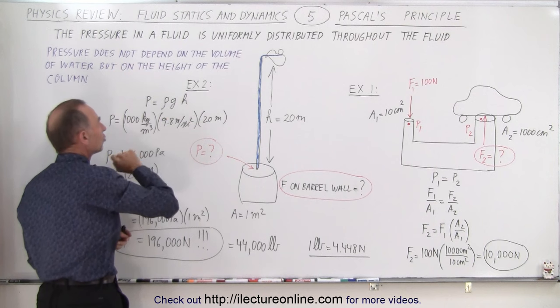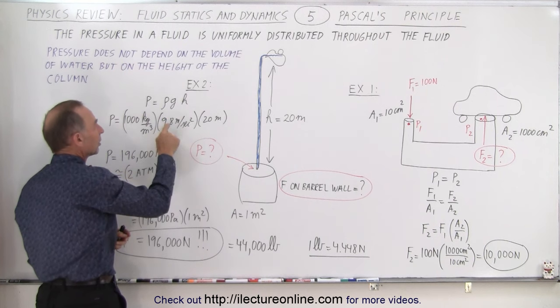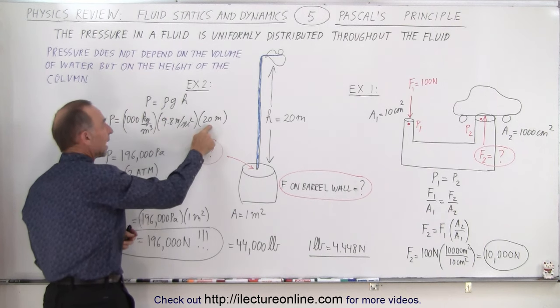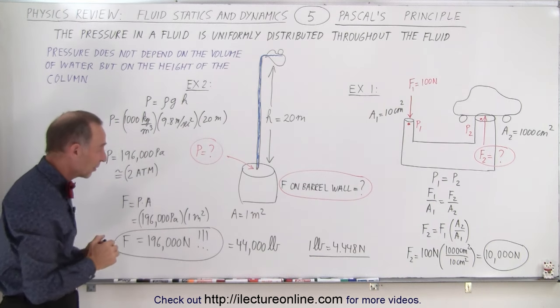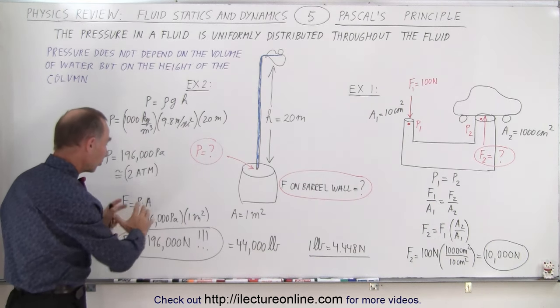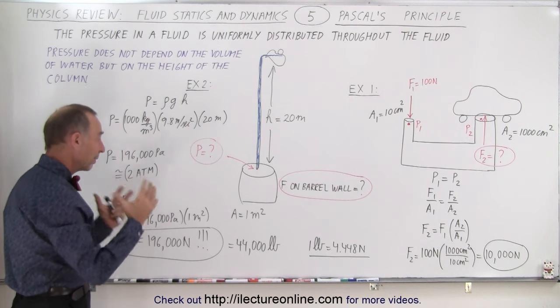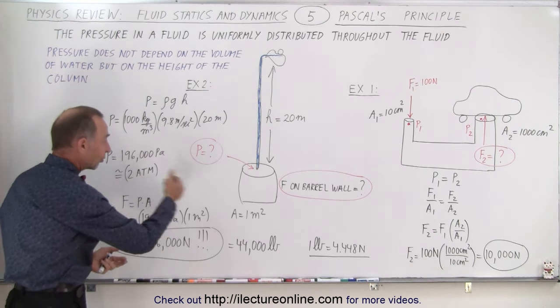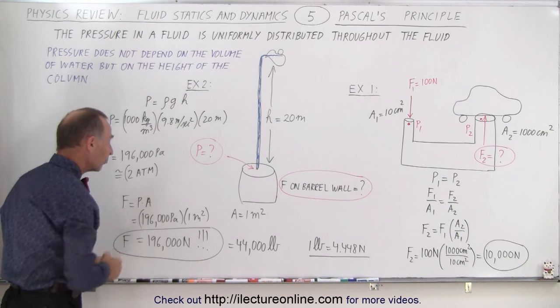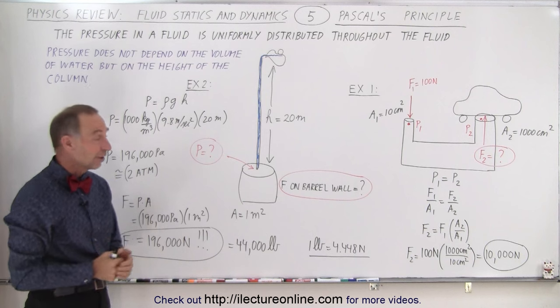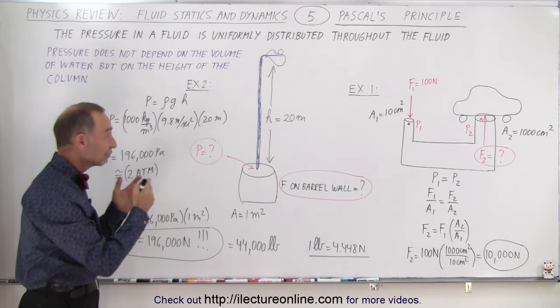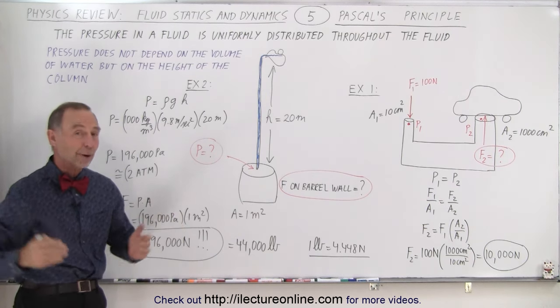Pressure always will be ρgh, the density of water, acceleration due to gravity, the height of the column, and notice that causes a pressure of almost two atmospheres. Multiplying the pressure times the area, the surface area, the barrel wall, let's say it's one square meter, that will give you a force of 196,000 Newtons, which is about 44,000 pounds.